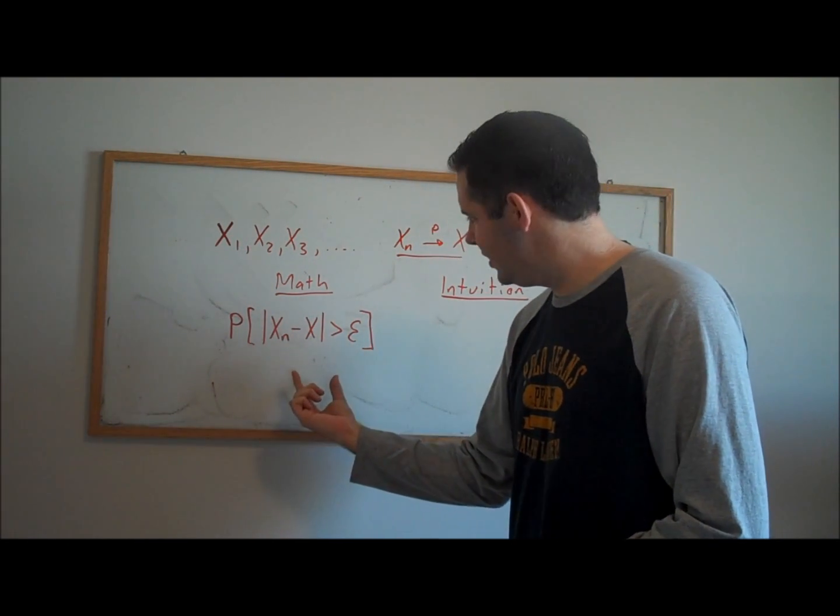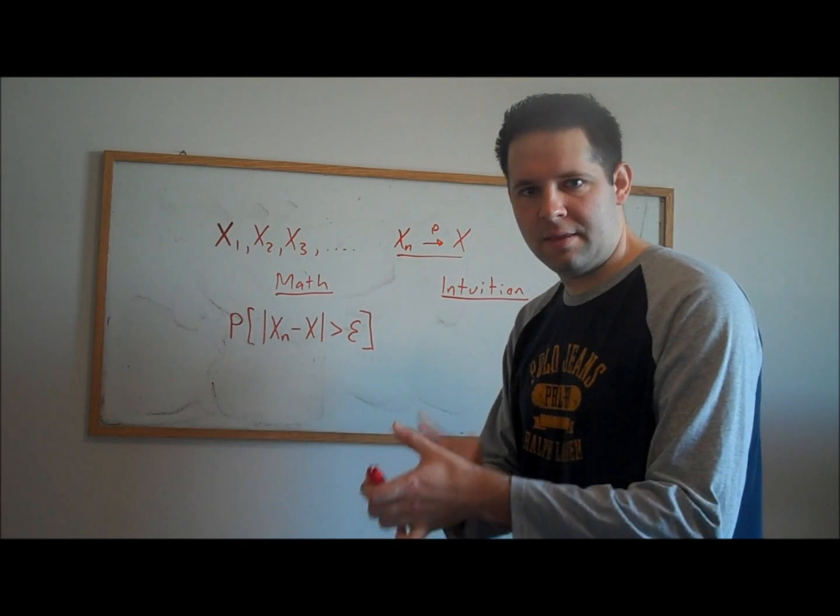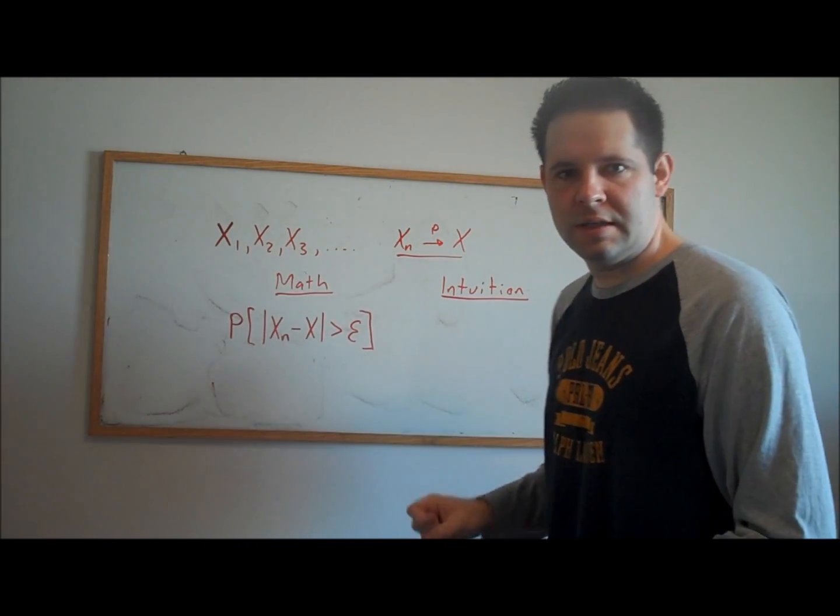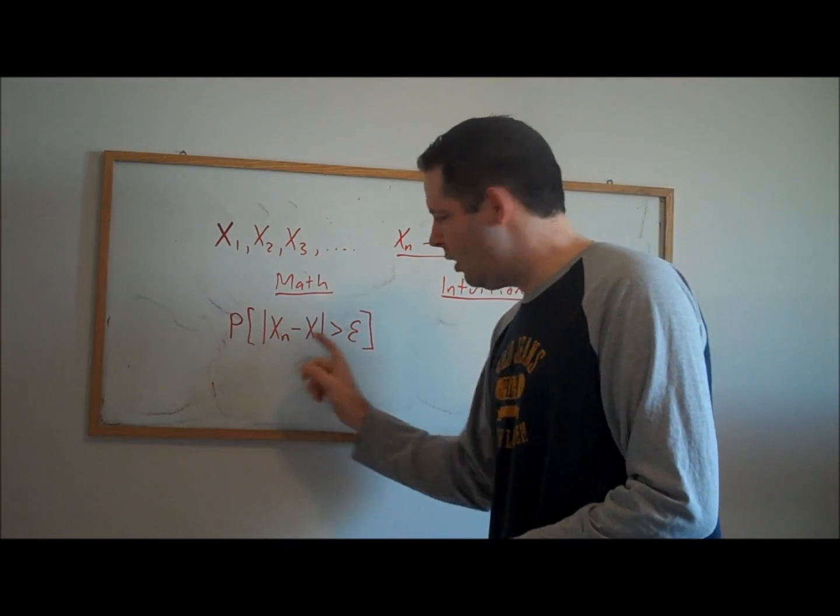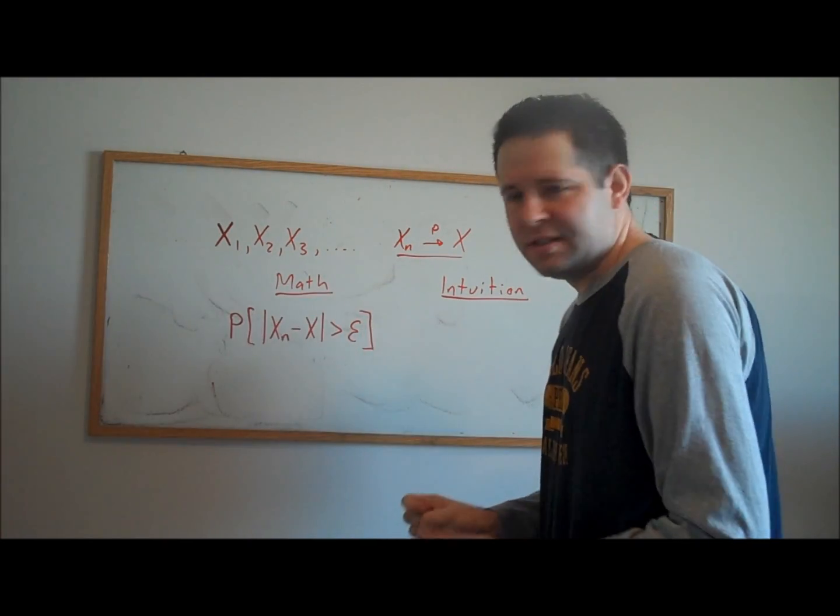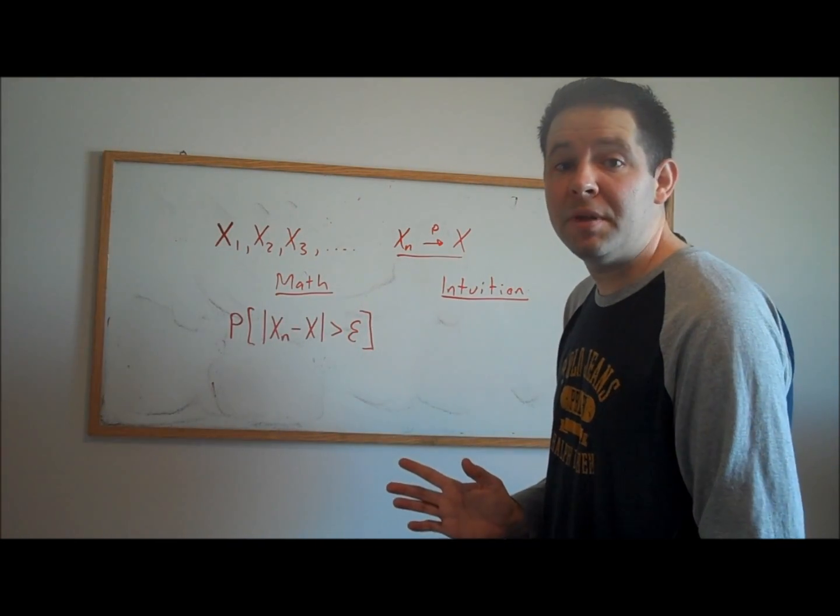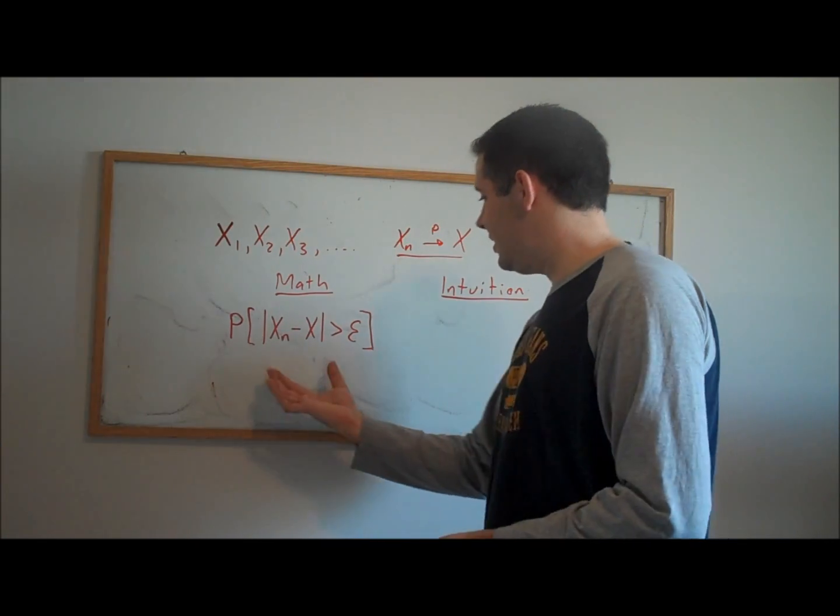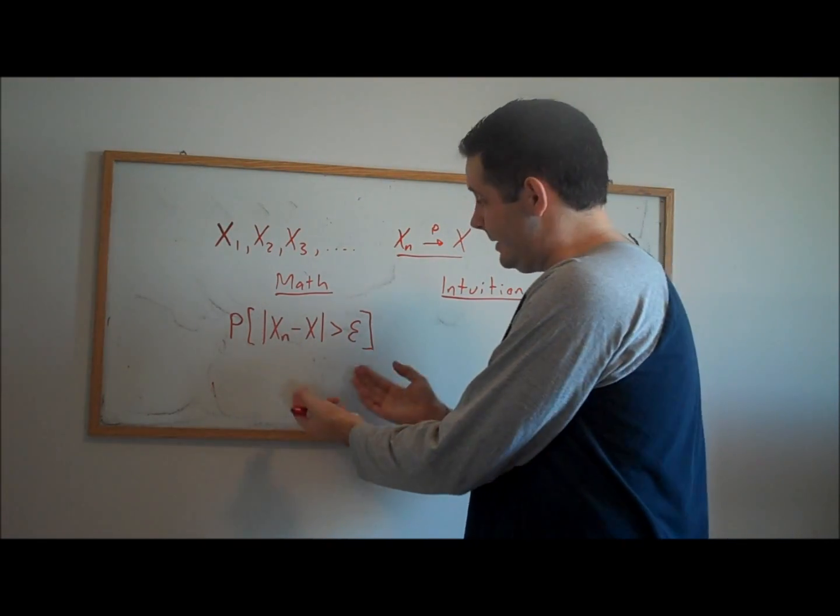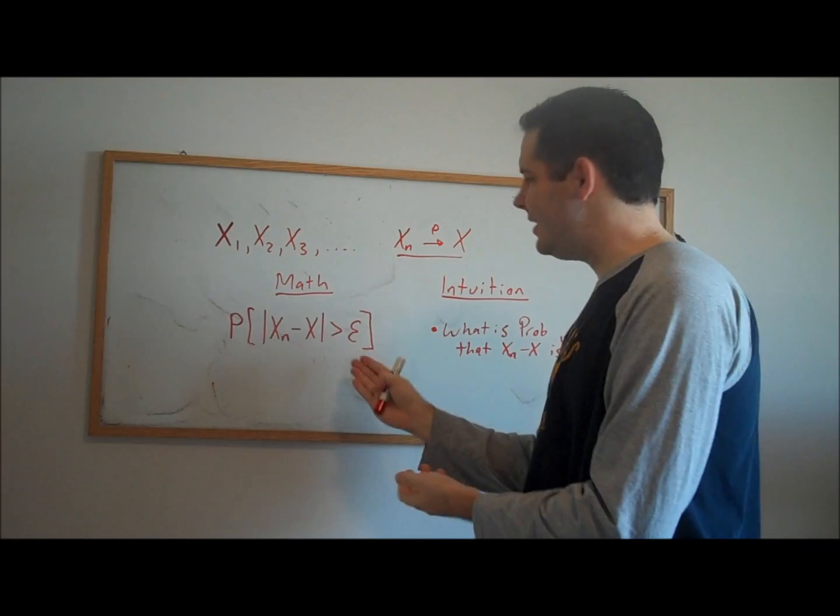And all it really says is, on the left-hand side of this probability statement, we're taking the nth element of this sequence of random variables, and we're asking, how far is that from X? But because it's a random variable, what is the probability that this random variable is big? That's what this probability statement is.